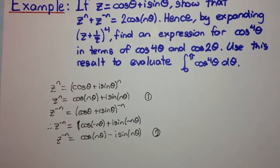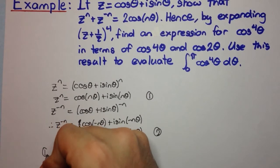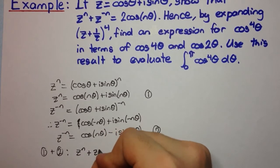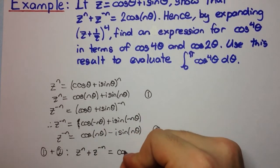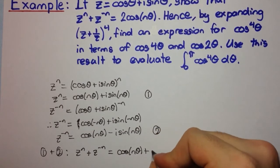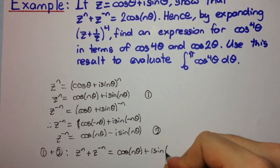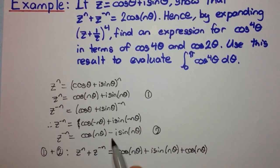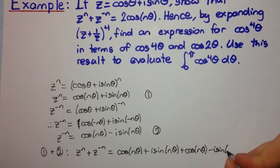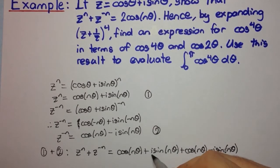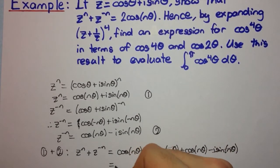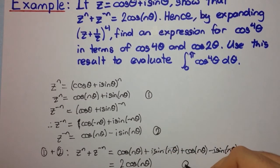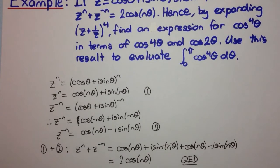We want z^n plus z^(-n), so we consider equation 1 plus equation 2. That gives us cos(nθ) + i sin(nθ) + cos(nθ) - i sin(nθ). The i sine terms cancel and we're left with 2cos(nθ), which is what we needed to prove. QED.